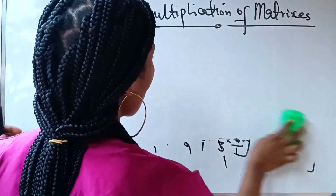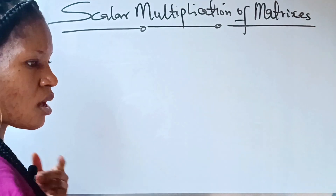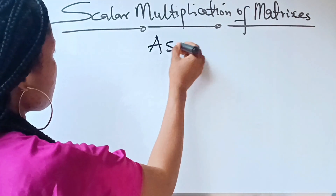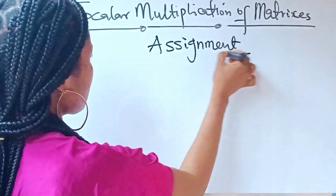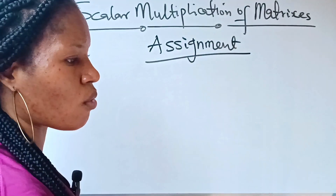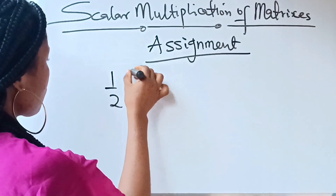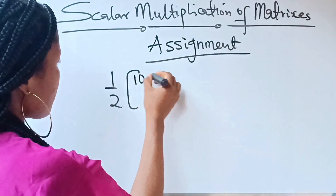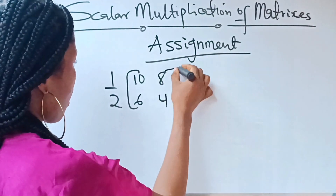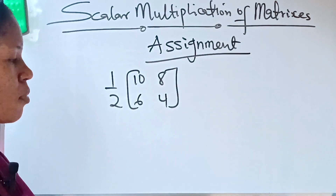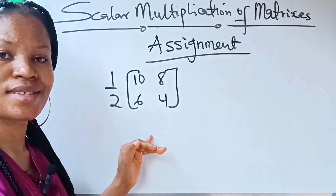Before we go into multiplication of two matrices, I would like you to solve this as an assignment. Solve: ½ multiplied by the matrix [10, 8; 6, 4]. Do it and drop your answer in the comments section.